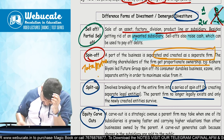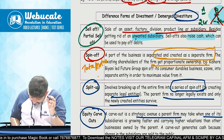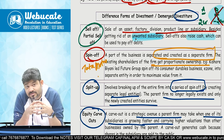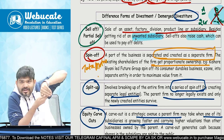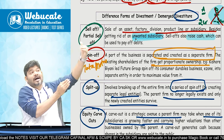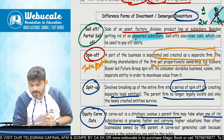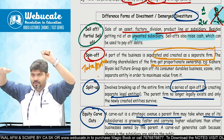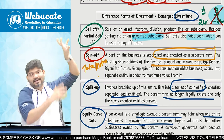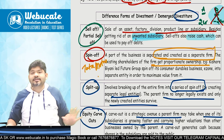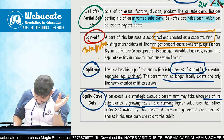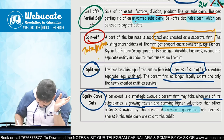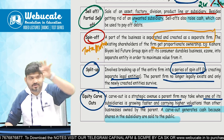Then there is equity carve-out — a strategic avenue where a parent firm may take one of its subsidiaries that is growing faster and carrying higher valuation. Suppose I am in video lectures, books, and test series, but doing very well in video lectures only. I will carve out a separate entity for video lectures, demand a higher valuation, and sell it. Carve-out generates cash because shares in the subsidiary are sold to the public. So the four ways of divestiture are: sell-off, spin-off, split-up, and equity carve-out.